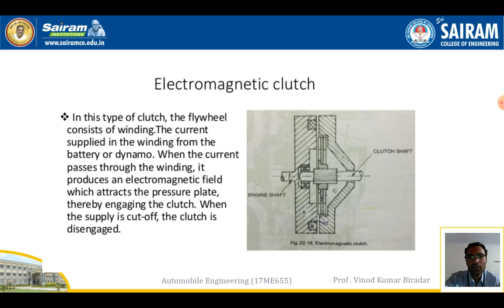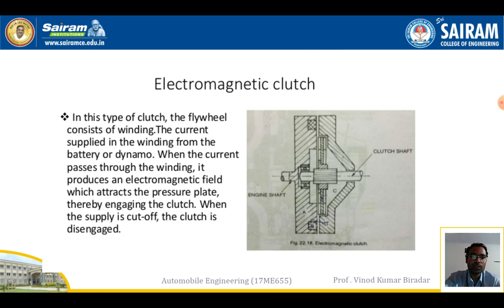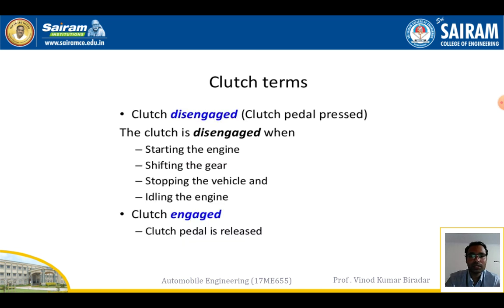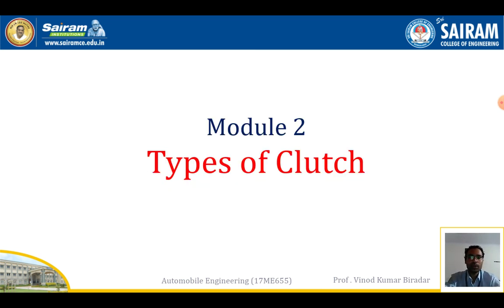Electromagnetic clutch: as the name indicates, electromagnetic power is used. The flywheel consists of a winding; current is supplied to the winding from the battery via the dynamo. When current passes through the winding it produces an electromagnetic field which attracts the pressure plate, thereby engaging the clutch. When the supply is cut off, the clutch is disengaged. So these are the different types of clutches. I hope you understand — thank you.